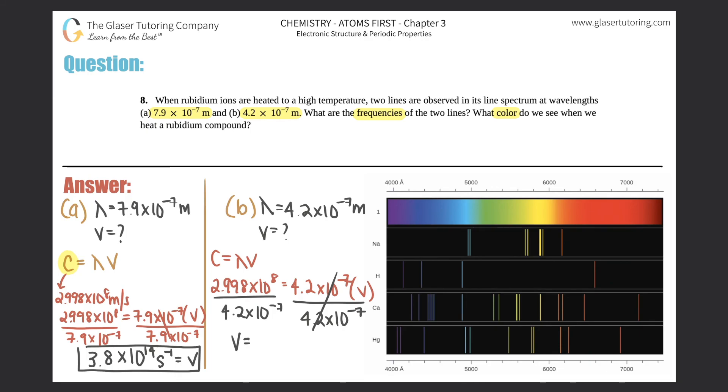So frequency is 2.998 × 10^8 divided by 4.2 × 10^-7, and you get 7.1 × 10^14 hertz. You could write it as Hz or per second (s^-1), and that equals your frequency for that one.